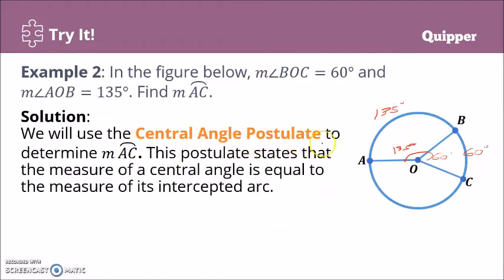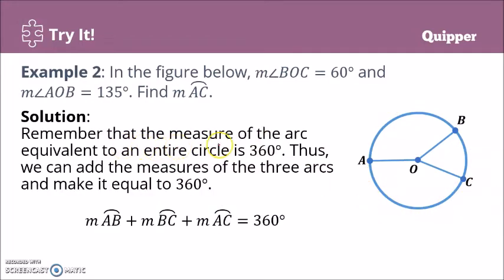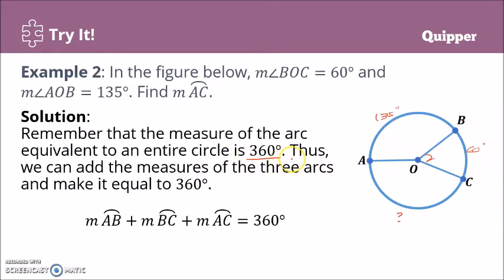Now, remember that the measure of an entire circle is 360 degrees. Using the Central Angle Postulate, arc BC is 60 degrees, arc AB is 135 degrees, and we need to find arc AC. These three arcs make up the full circle.